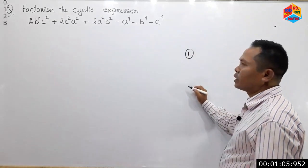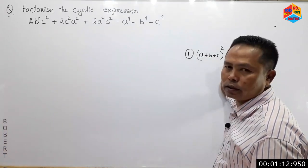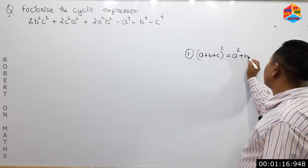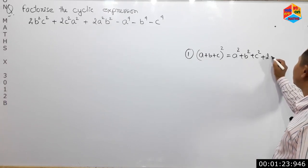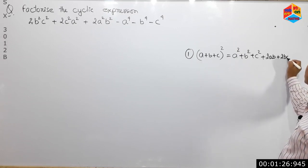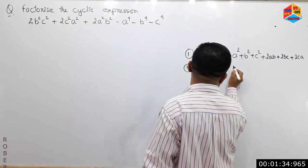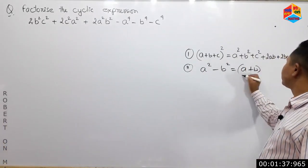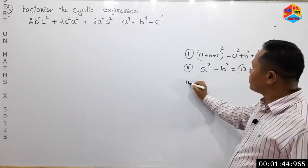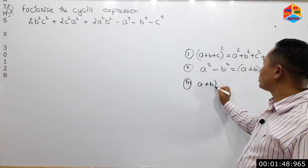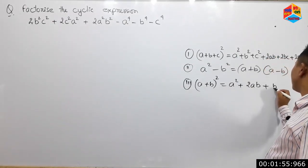Formula A2: a squared plus twice ab plus twice bc plus twice ca. Formula A2 number two is the a-square minus b-square formula: a plus b times a minus b. Formula number three is a plus b whole square equals a squared plus twice ab plus b squared.